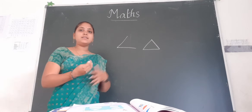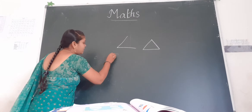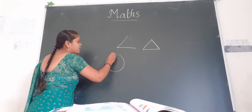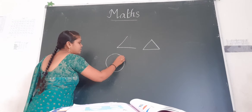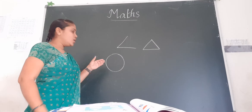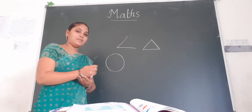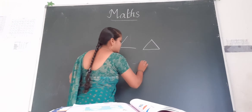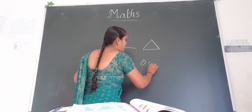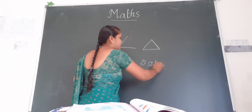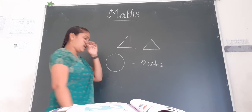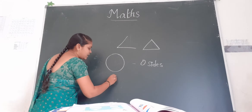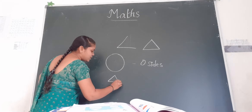We also discussed some shapes. What is the name of this shape? It is a circle. So does a circle have any sides children? No. Circle has zero sides.